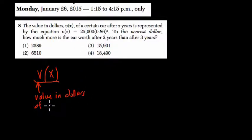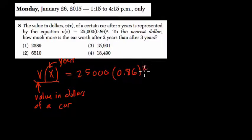Of a certain car. Oh, of a car. However, after X years, so X is the number of years. I like to label this stuff as I go. And here's the equation, $25,000 times 0.86 to the X power.